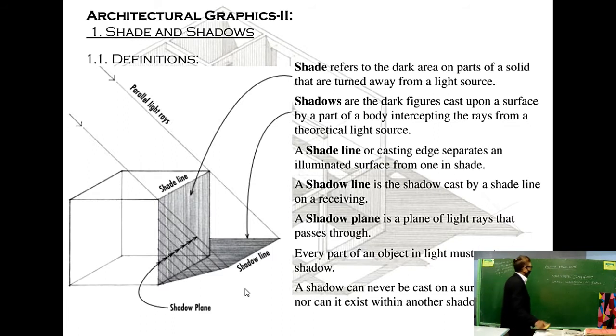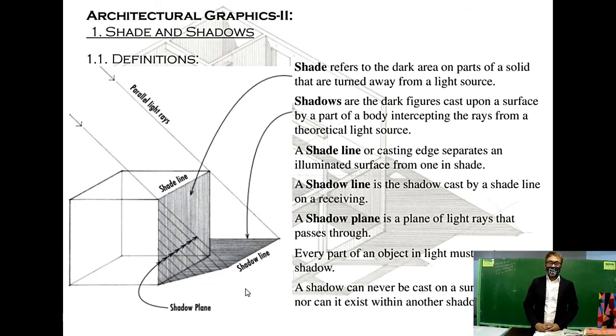Shade refers to dark areas on parts of a solid that are turned away from the light source. Shadows are the dark figures cast upon a surface by a part of the body intercepting the rays from a theoretical light source. A shade line or casting edge separates an illuminated surface from one in shade. A shadow line is a shadow cast by a shade line on a receiving surface. A shadow plane is a plane of light rays that passes through every part of an object and light must cast a shadow.